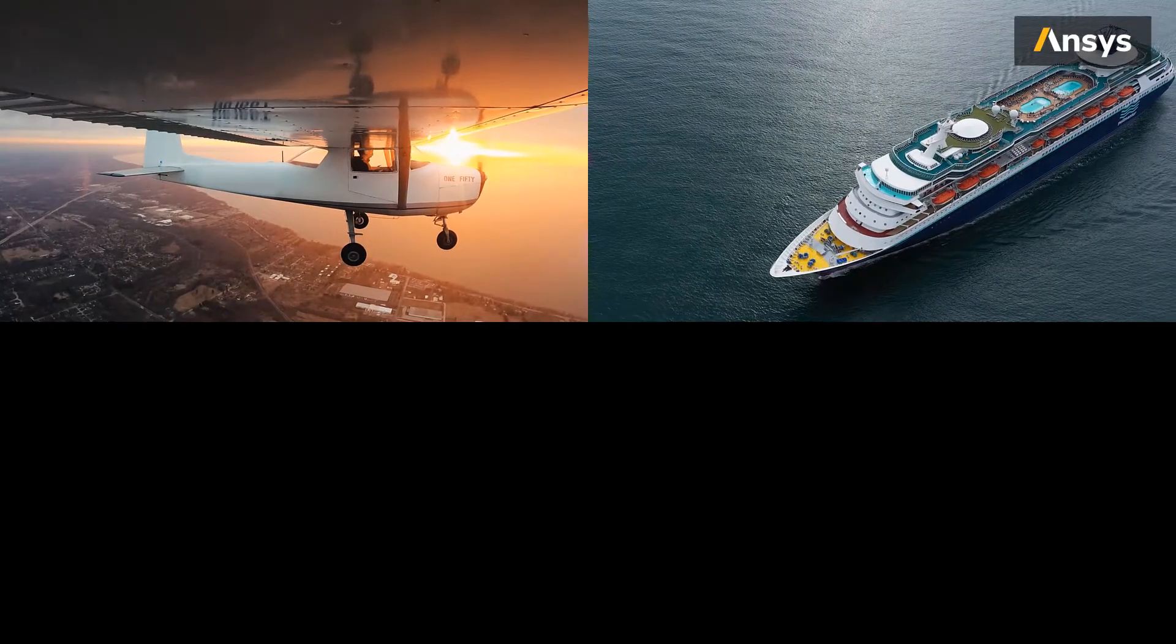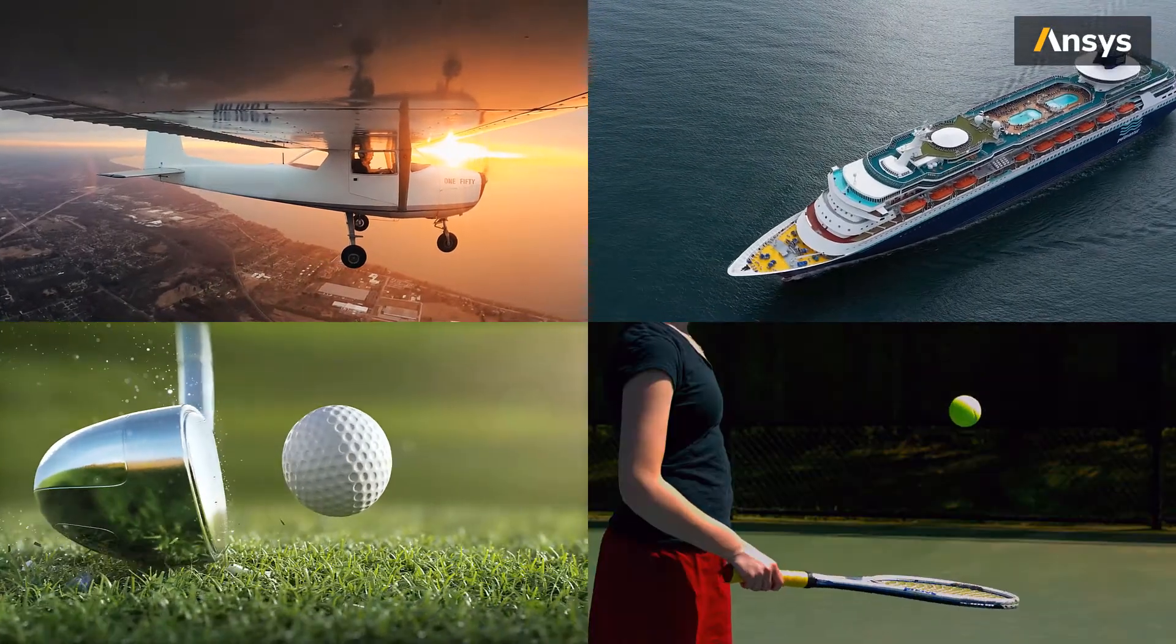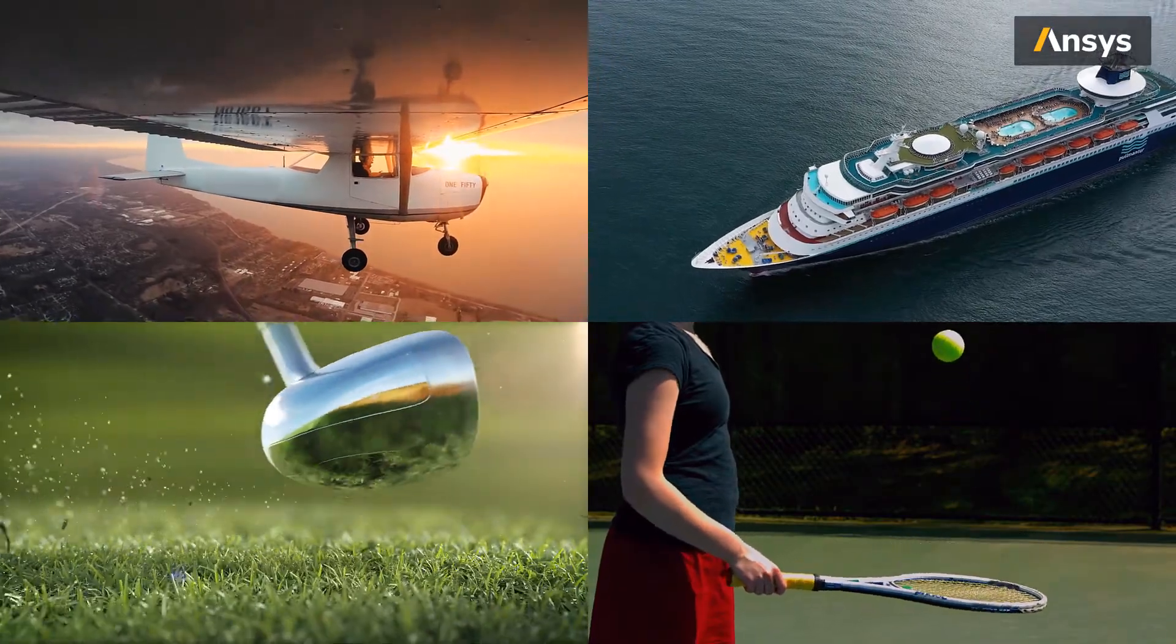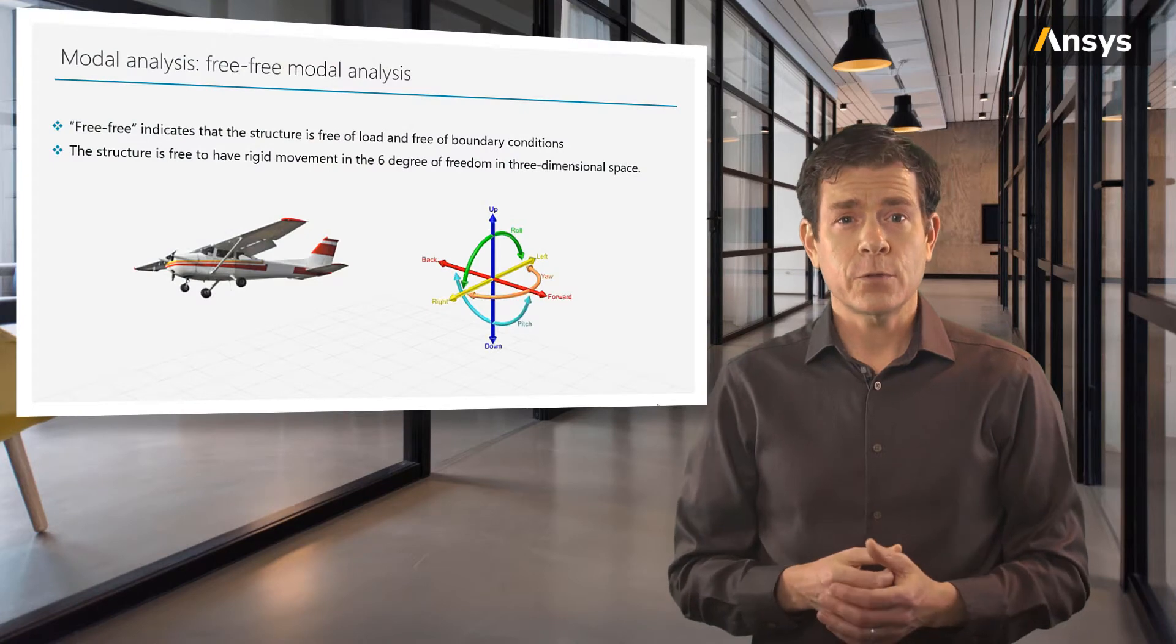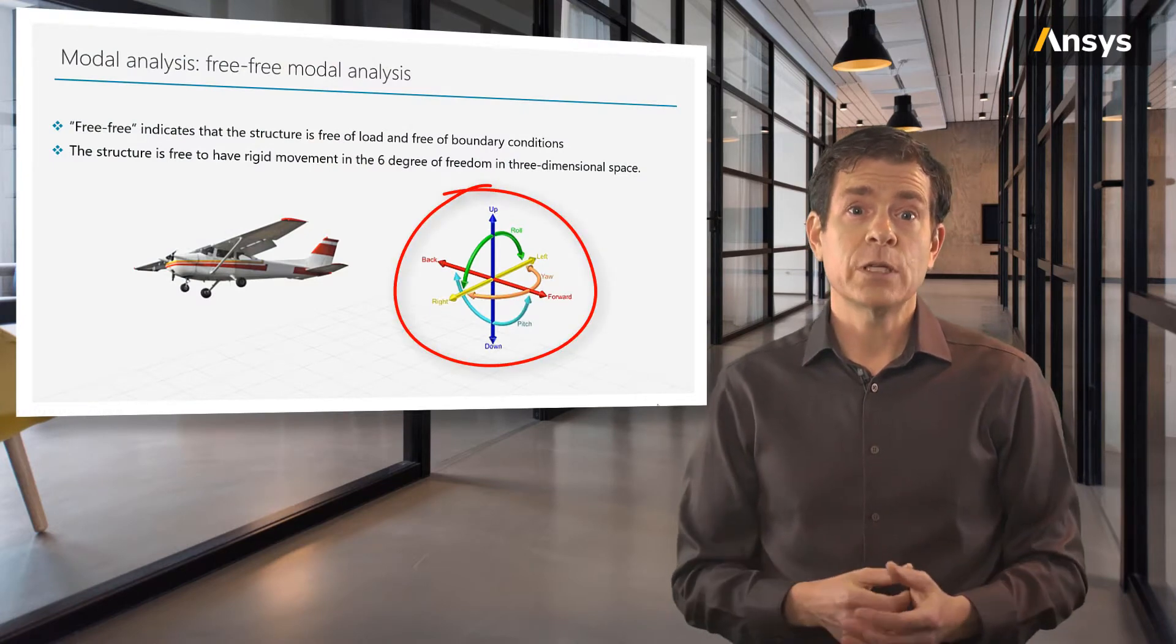Free-free signifies the structure is free of loads and free of boundary conditions, and this type can be common for planes, ships, sporting goods like balls, and even beyond. This means that the structure is free to have rigid movement in the six degrees of freedom in three-dimensional space, which is shown here.